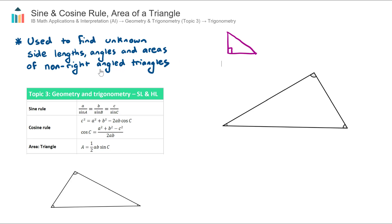We're now moving on to non-right-angle triangles — triangles that do not have a right angle. In order to find unknown side lengths, angles, and areas of these non-right-angle triangles we need to use these new formulas: the sine rule, the cosine rule (there are two versions — the second is just a rearrangement of the first), and the area of a triangle rule.